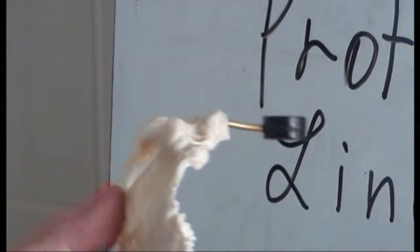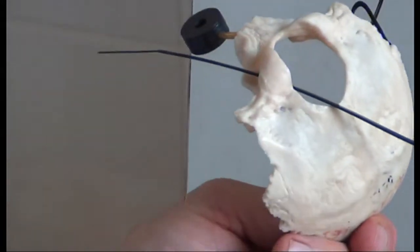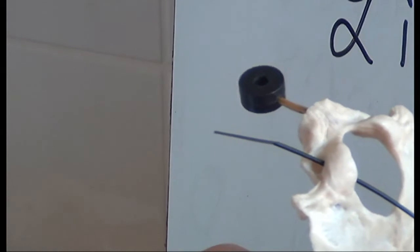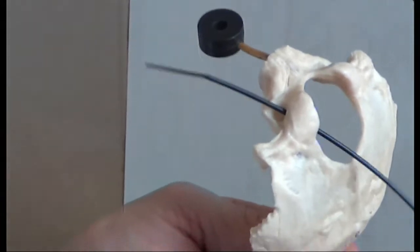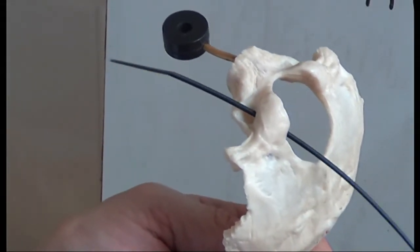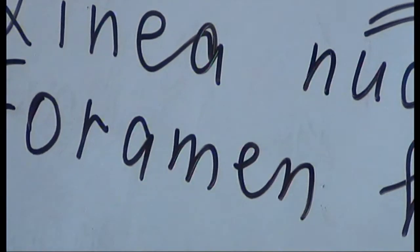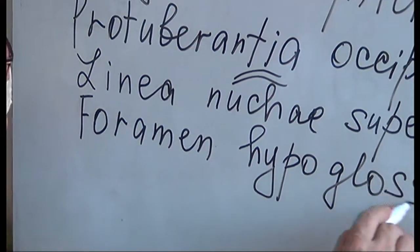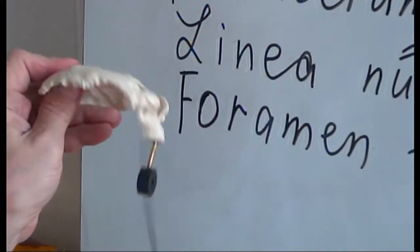Then, a very important foramen which passes transversely to the axis of the condylus. It is named foramen nervi hypoglossi, or foramen hypoglossalis — they mean the same. This is the passage for cranial nerve number 12, nervus hypoglossus. It passes through the foramen hypoglossalis, and it is paired — one from each side.